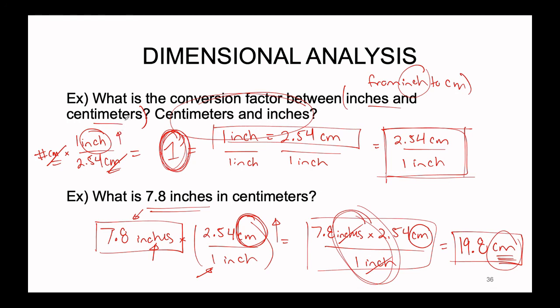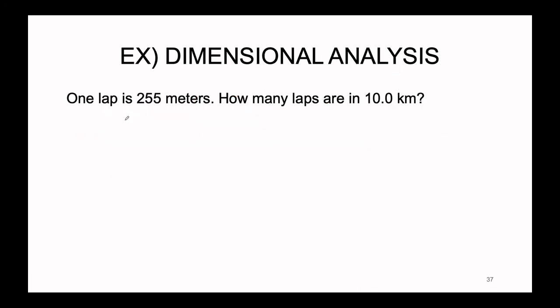So if going from centimeters to inches, the conversion factor is the exact inverse — one inch on top, 2.54 centimeters on the bottom. This ensures centimeters cancel out and the only remaining unit is the inch. Here we have another example problem involving multiple conversions: one lap around a track is 255 meters. How many laps are there in 10 kilometers?